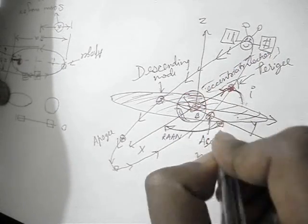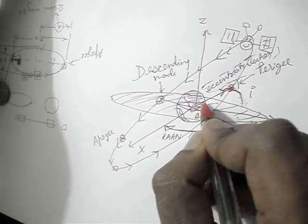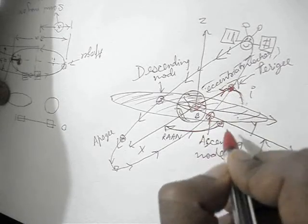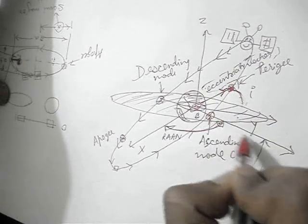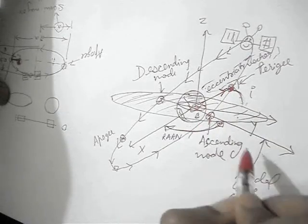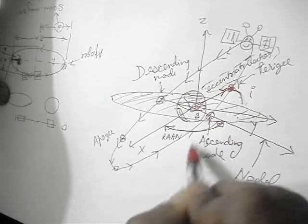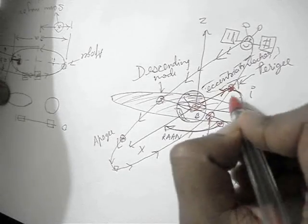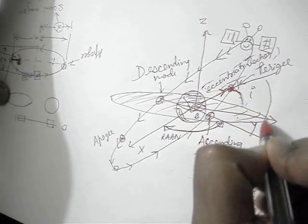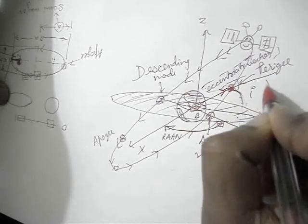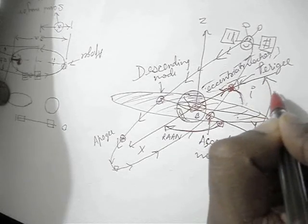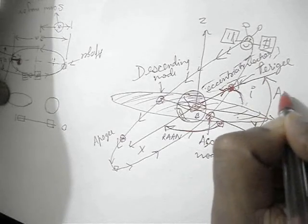This vector will be the eccentricity vector. Now, the angle between the eccentricity vector and the nodal line — from the side of the ascending node — is what we call the argument of perigee.